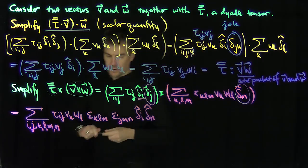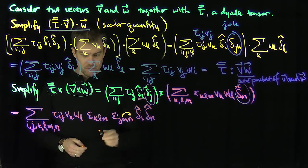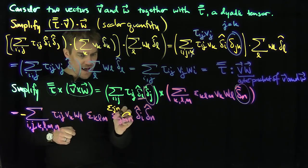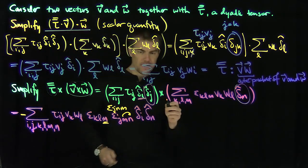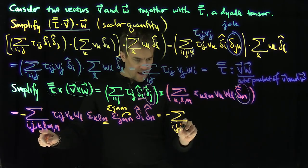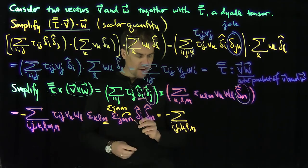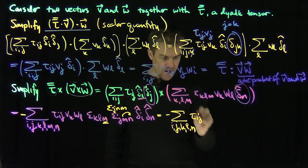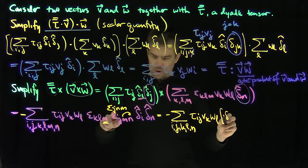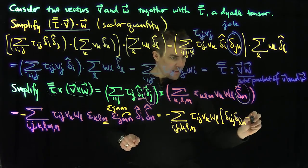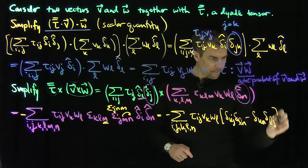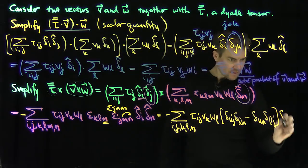Now I'd like to use the match-mismatch identity. I'm going to flip two indices to put m in the last slot, which induces a negative sign: negative epsilon_jmn becomes negative epsilon_jnm... placing m last. By the match-mismatch identity, I eliminate the m summation. This gives negative the sum over i, j, k, l, n of tau_ij V_k W_l, and the Kronecker delta terms are: delta_kj delta_ln (match) minus delta_kn delta_lj (mismatch), times delta-i-hat delta-n-hat.